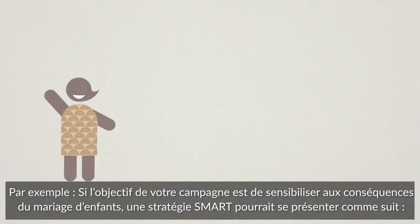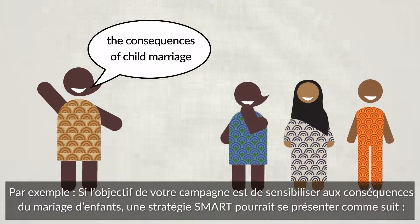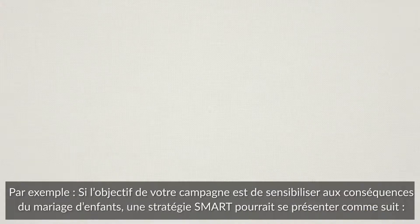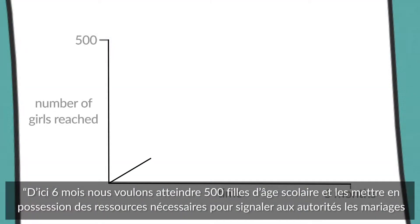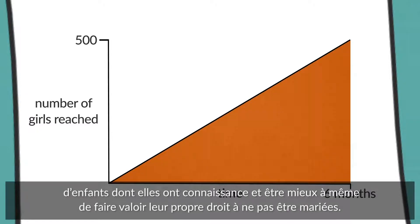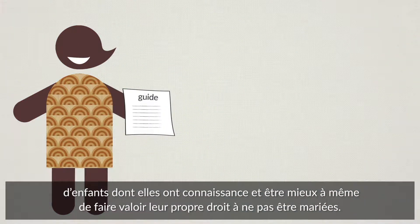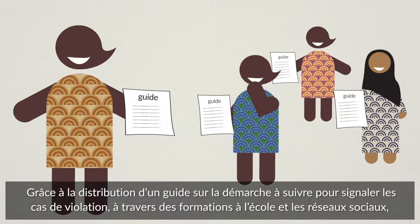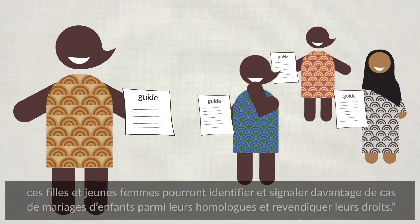For example, if you aim to raise awareness about the consequences of child marriage through a communications campaign, a SMART strategy could be: by the end of six months, we want to have reached 500 school-aged girls and for them to be equipped with resources to report child marriage to authorities, to increase their ability to advocate for their own rights not to be married. By distributing a guide on how to report violations via school trainings and social media, young women and girls will identify and report more cases of child marriage amongst their peers.